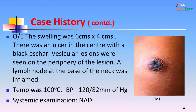On examination, the swelling was 6 centimeters by 4 centimeters. There was an ulcer in the center with a black eschar. Vesicular lesions were seen on the periphery of the lesion. A lymph node at the base of the neck was inflamed. The temperature of the patient was 100 degrees Fahrenheit. Pulse was 120 by 82. Systemic examination showed no abnormality.